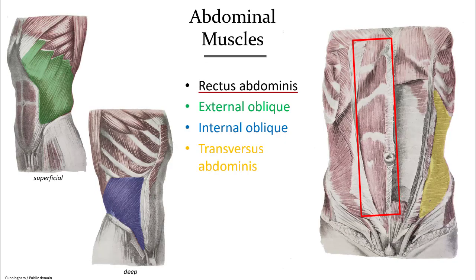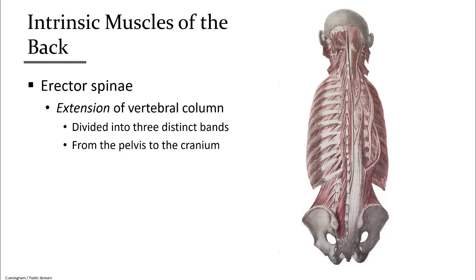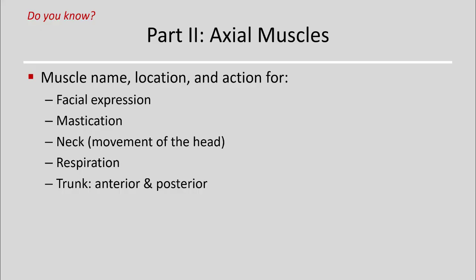In summary, all four abdominal muscles are listed in order from superficial to deep. Moving to the back muscles that move the trunk, the key muscle introduced is the erector spinae group. This group has three distinct subgroups, collectively attaching from the sacrum and iliac crest up to the transverse and spinous processes of various vertebrae, as well as ribs and the back of the head, to help lift and extend the back. For the axial muscles overall, you should know each muscle's name, location, and action, and be able to identify them by description or in a diagram.